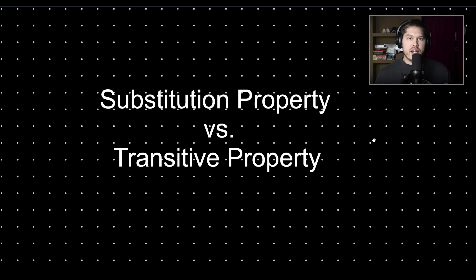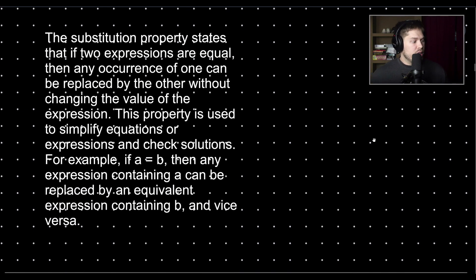Let's look at some definitions. The substitution property states that if two expressions are equal, then any occurrence of one can be replaced by the other without changing the value of the expression. This property is used to simplify equations or expressions and check solutions. For example, if A equals B, then any expression containing A can be replaced by an equivalent expression containing B, and vice versa.